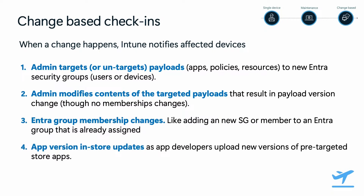First, an admin changing the targeting for a payload — like adding a new user or device group to an already existing assignment. Second, making a change to the context of a payload, like changing the value of a given policy, or anything that results in a document version change — that will trigger a notification. Third, Entra membership changes also trigger a notification, like an Entra admin nesting a new security group to a group that is already being targeted on a payload.